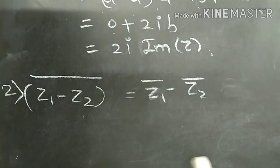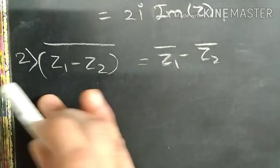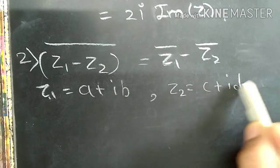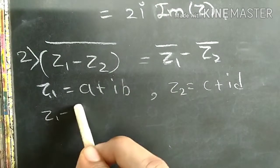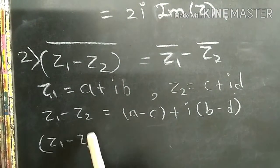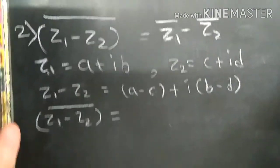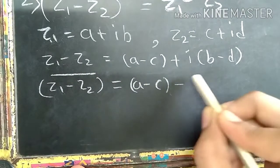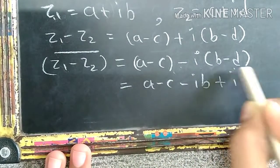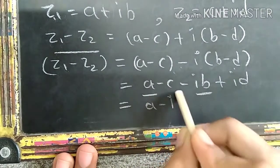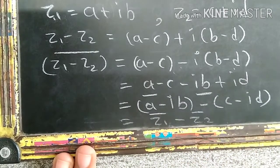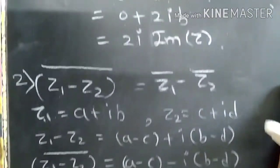The next property is: the conjugate of Z1 minus Z2 equals Z1-bar minus Z2-bar. If Z1 is A plus IB and Z2 is C plus ID, then Z1 minus Z2 equals A minus C plus I times B minus D. The conjugate of Z1 minus Z2 equals A minus C minus I times B minus D, which is A minus IB plus C minus ID — nothing but Z1-bar minus Z2-bar. Hence proved. These are the properties of subtraction of complex numbers.